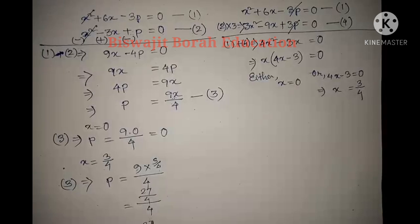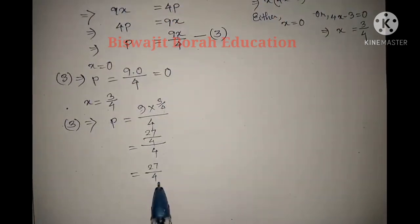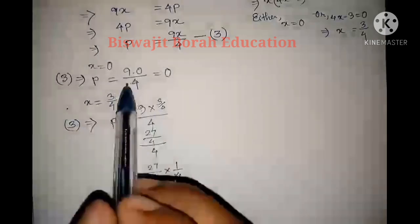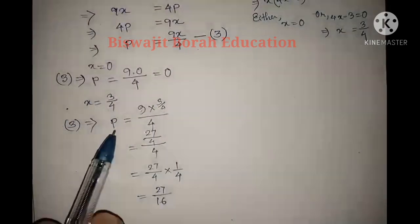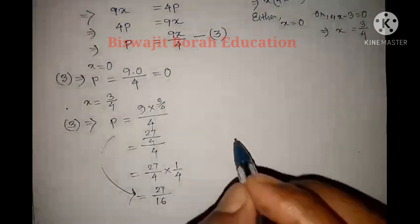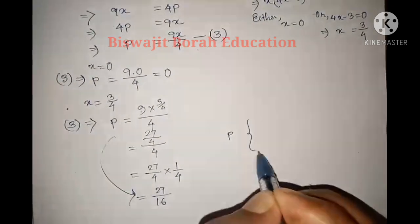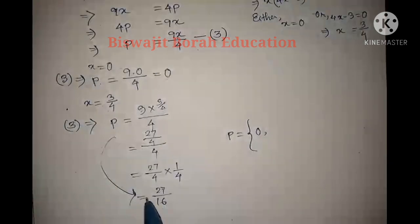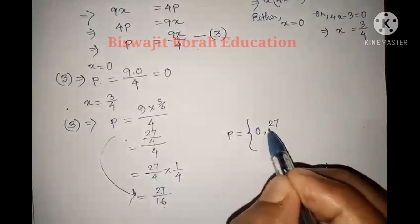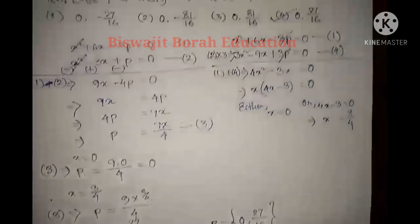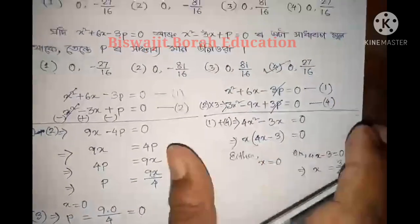Now we should be using the p values: 0 and 27/16. So the p value is 0 and the p value is 27 by 16.